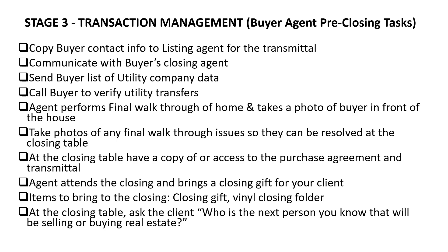Now for the buyer agent pre-closing tasks. Copy the listing realtor with all the buyer's contact information so they can send out the transmittal. Communicate with the buyer's closing agent to confirm they received the transmittal and address any questions. Get utility company data to your buyer and make sure they transfer utilities prior to closing. Do a final walkthrough with your buyer — and if they don't want to do one, you go do it. Take a photo of your buyer in front of the house holding a sold rider — great for LinkedIn, Facebook, and Instagram. Photograph any final walkthrough issues like garbage left behind or move-out damage so they can be resolved at the closing table. Make sure you have access to the purchase agreement and transmittal at the closing, and attend the closing.